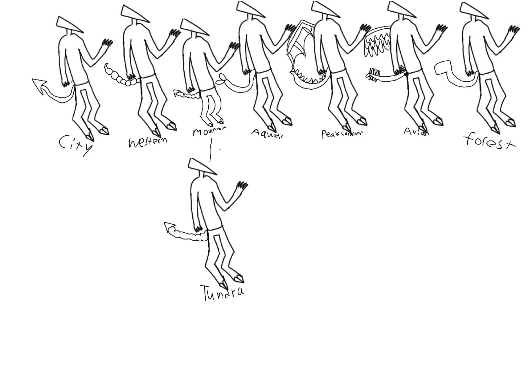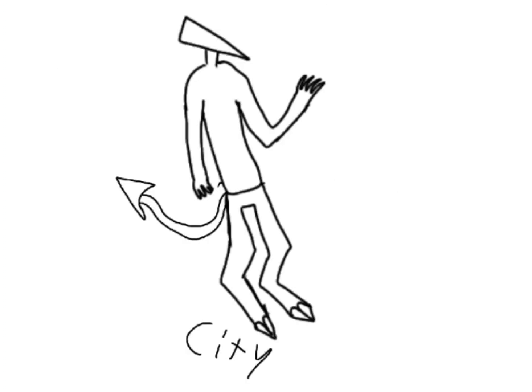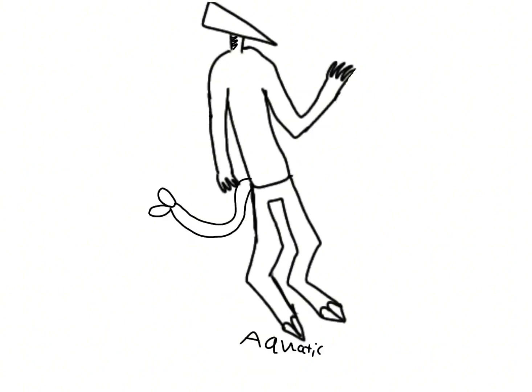I created these creatures and I'm just going to be explaining the biology. I'll start with the most common one, the city type — it just has a simple sharp tail.